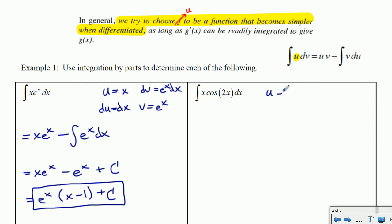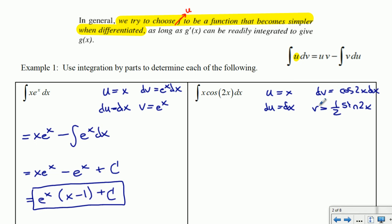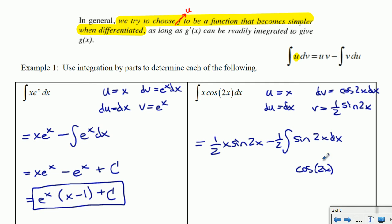Let's pick something better: u equals x and dv equals cos 2x dx. Then du equals dx and v equals one half sine 2x — we can confirm that's correct because its derivative gives cos 2x. The integration by parts formula gives us one half x sine 2x minus the integral of one half sine 2x dx. The antiderivative of sine 2x comes from negative one third cos 2x... accounting for chain rule we should have a negative and multiply by one half, giving negative one quarter cos 2x.